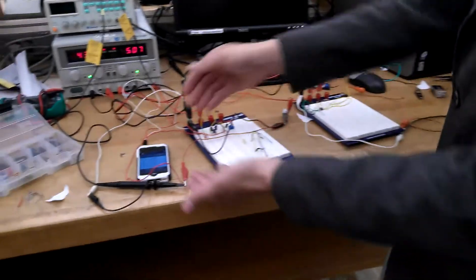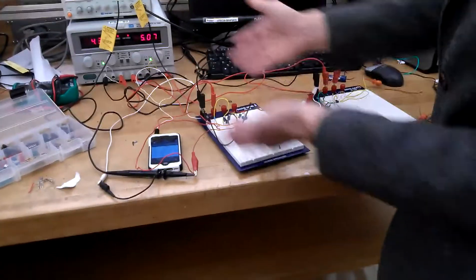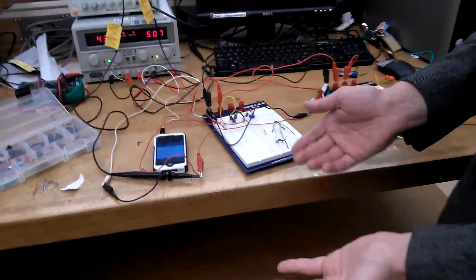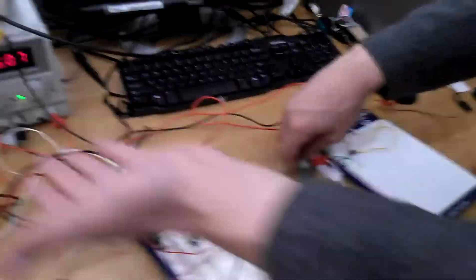Transmitter to receiver. We have our iPhone hooked up to our first circuit, our transmitter circuit, which is connected with a DC bias.